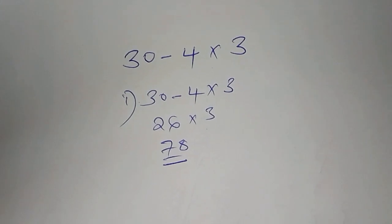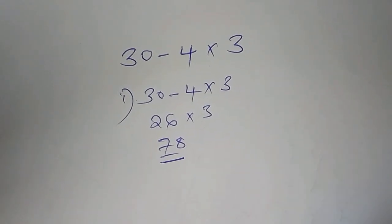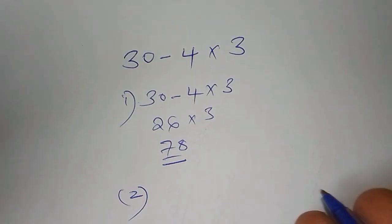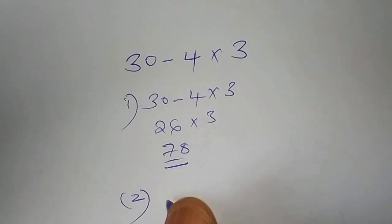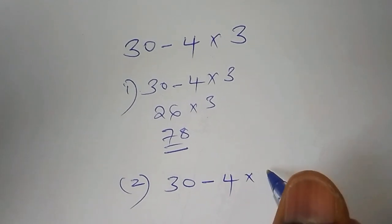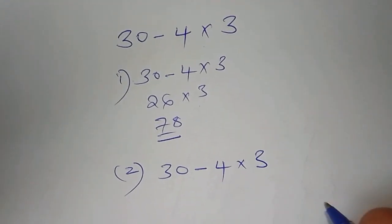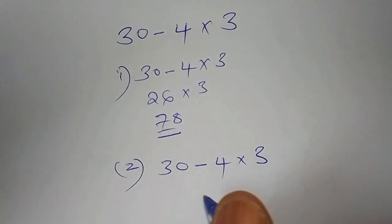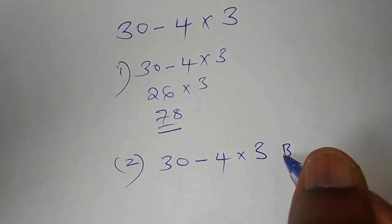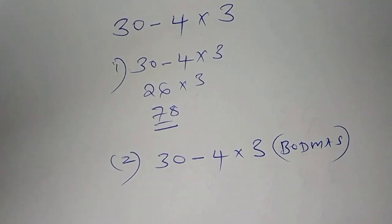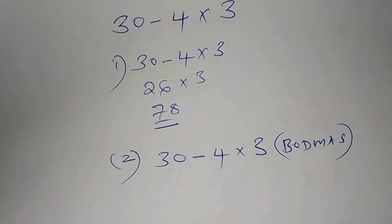Now, without knowing that there is something that is called the order of operation. So I want us to begin our second option, where we have 30 subtract from 4 multiplied by 3. So we need to look at what is called the BODMAS. There is something that is called the BODMAS. So this BODMAS is the one that actually guides us to work out this mathematic problem.